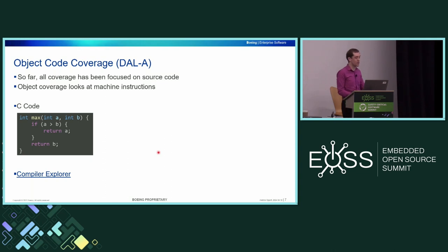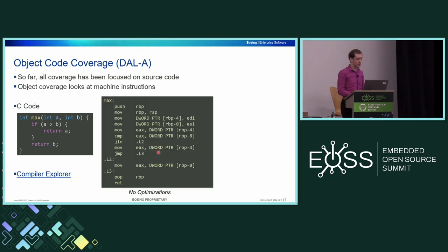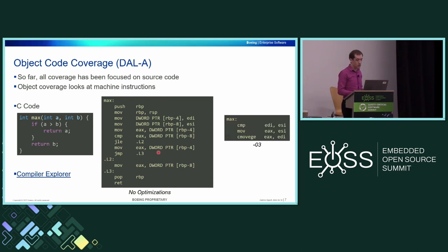The next type of coverage is not focused on the source code at all, but on the object code — the binary that runs on the target, or the machine instructions. The goal is to look at what actually runs on the target. If we have source code on the left, we know compiling it gives us a set of machine instructions. However, the source code can remain exactly the same but you can change your compiler or tool chain settings and get a different set of machine instructions. Object code coverage is really focused on making sure you don't get any unintended or untested functionality in the machine code based on things other than the source code.